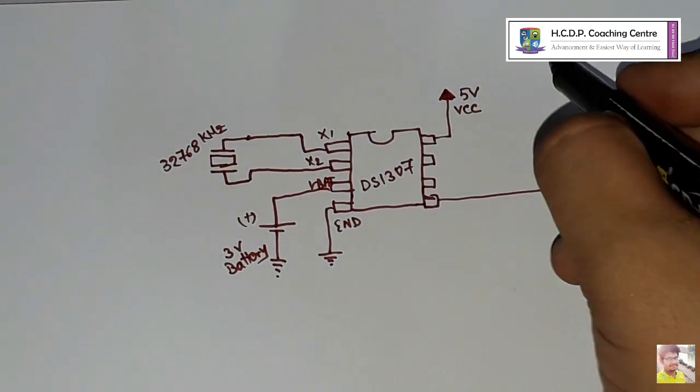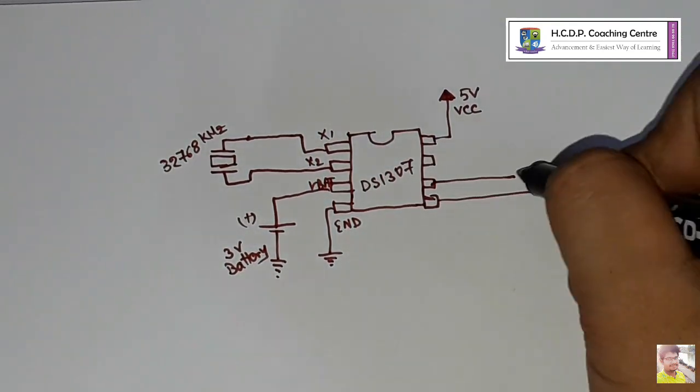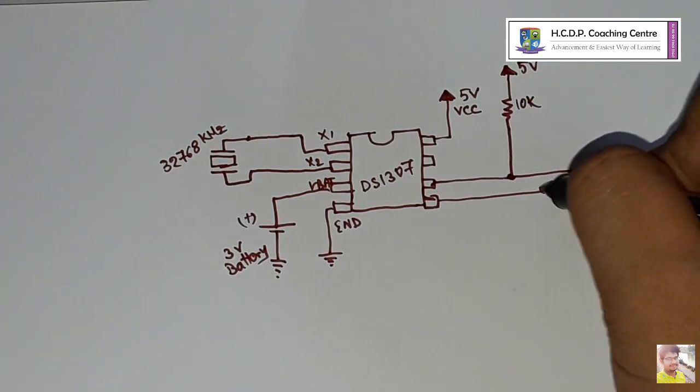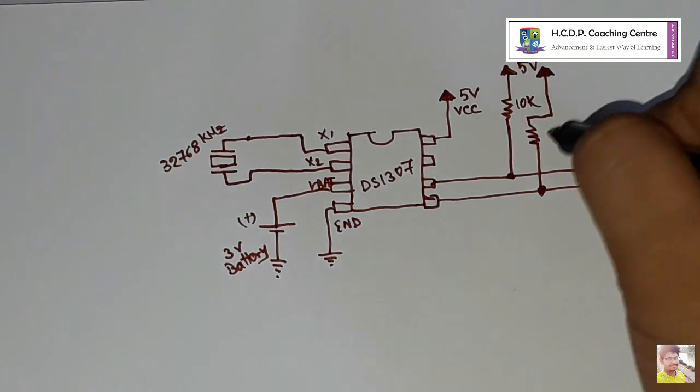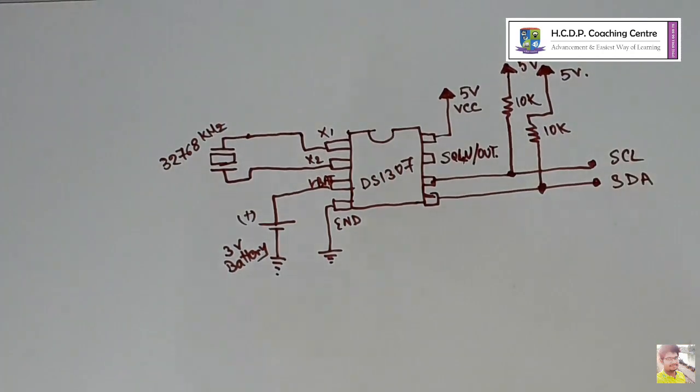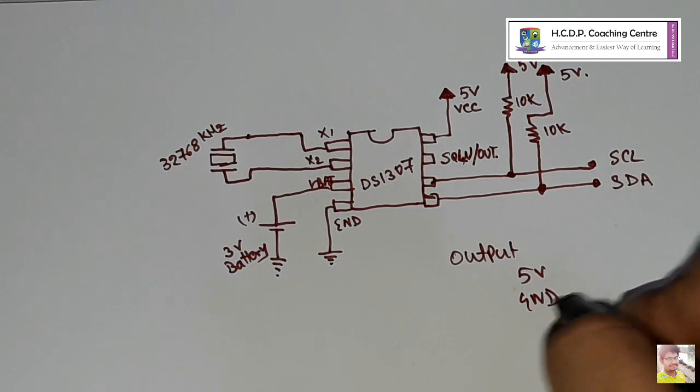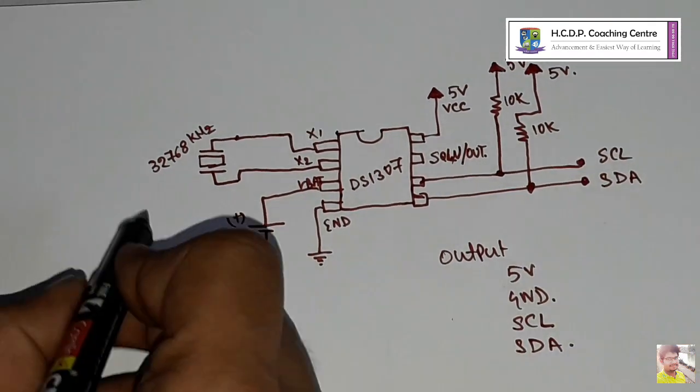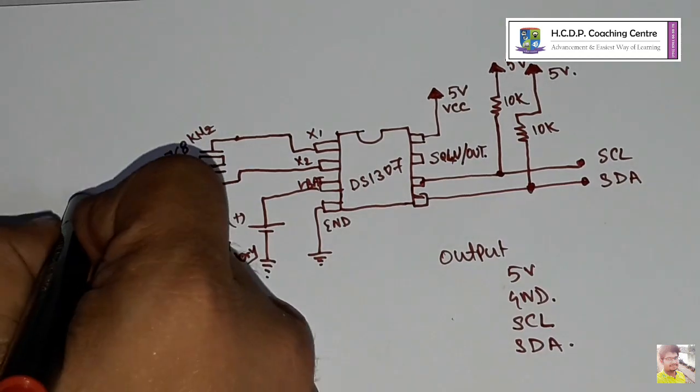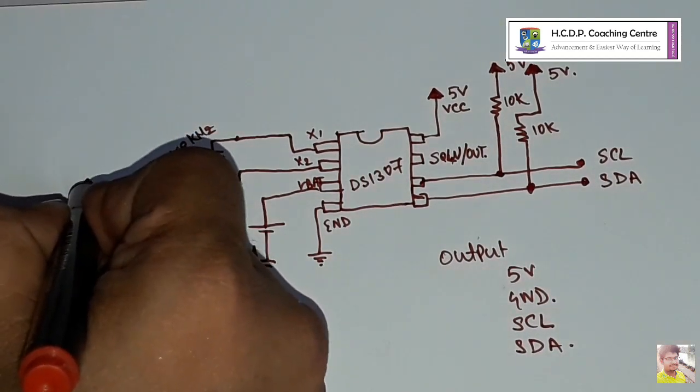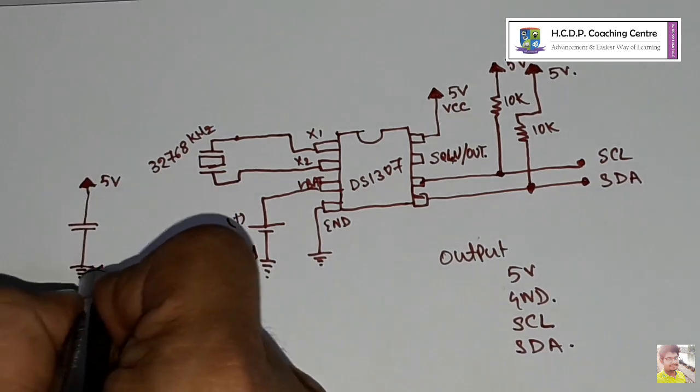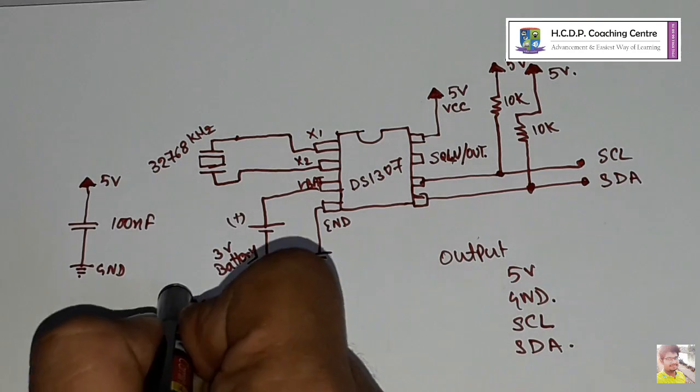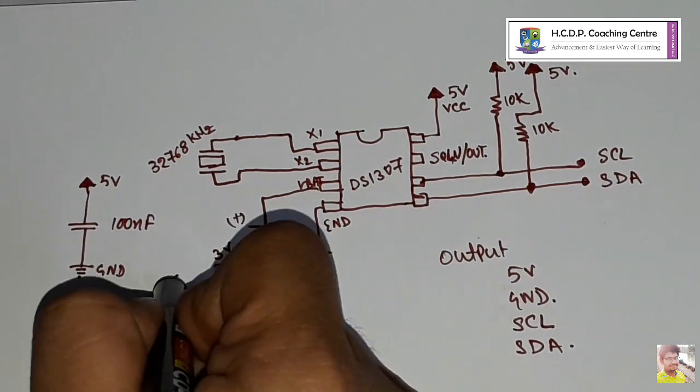Pin 3 is connected with the positive terminal of internal powered 3 volt battery. Pin 5 is the serial data pin and pin 6 is the serial clock. Both pin 5 and 6 are connected with 10 kilo ohms of resistor for pulling up the value. So the output pins are 5 volt, ground, serial clock and serial data respectively. I am adding an extra 100 nanofarad capacitor with the supply so that the frequency of the chip always be stable.